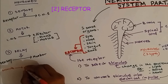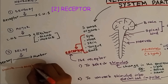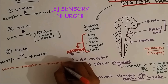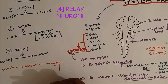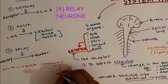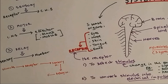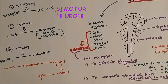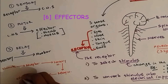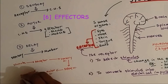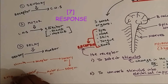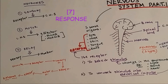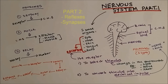Let's quickly summarize. We have a stimulus which is detected by the receptor. The receptor signal is carried by the sensory neuron, which is connected by the relay neuron. The relay neuron is connected to the motor neuron, and the motor neuron takes it to the effector. The effector causes a response — which could be a release of hormones or movement.